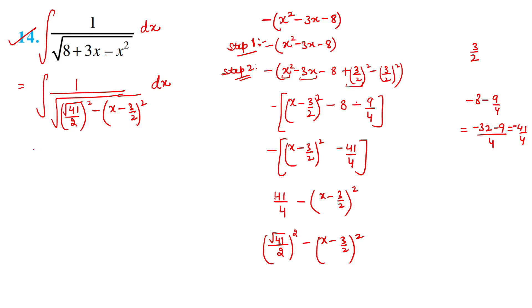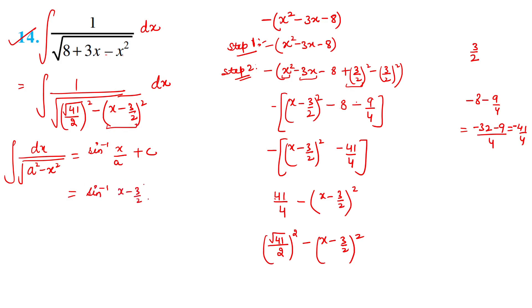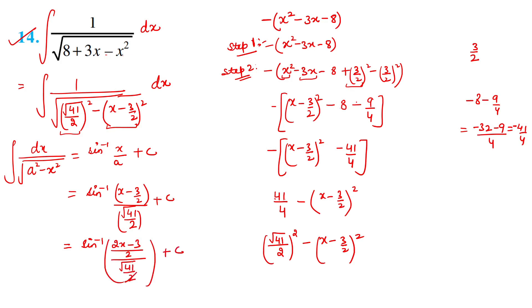The integral becomes ∫1/√[(√41/2)² - (x - 3/2)²] dx. Applying sin⁻¹ formula with a = √41/2 and x replaced by (x - 3/2): sin⁻¹((x - 3/2)/(√41/2)) + C. The 2s cancel, giving the final answer: sin⁻¹((2x - 3)/√41) + C.